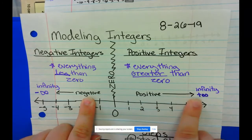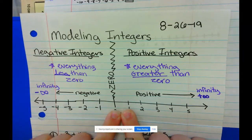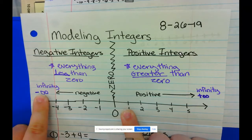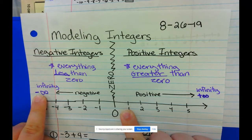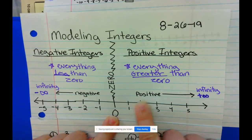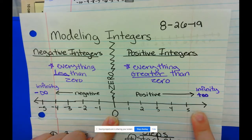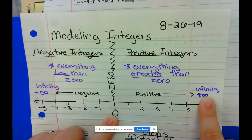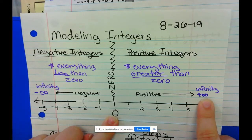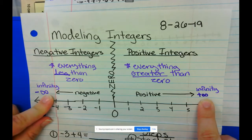Notice also on the side I've written infinity. From zero to the negative, it's going to go all the way to negative infinity, which means there are infinitely many negative numbers — the negative numbers never stop. The same thing goes on the right side: from zero on and on and on, forever and ever, it goes to positive infinity. The infinity symbol looks like a sideways 8.